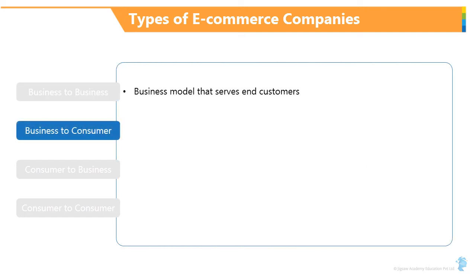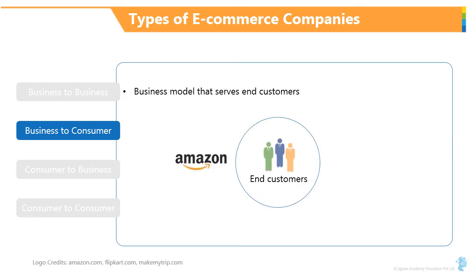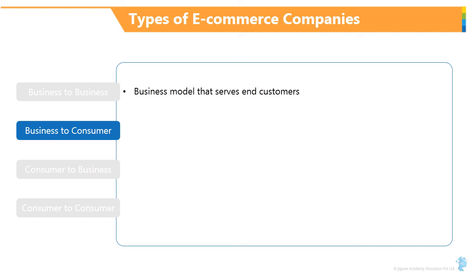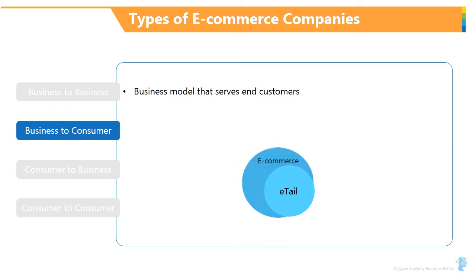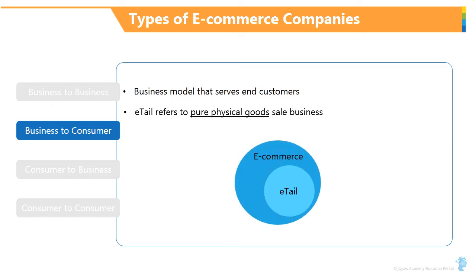The second one, B2C, business to consumer — the most popular one, which I'm sure you all would be aware of: Amazon, Flipkart, MakeMyTrip. Please note that sometimes e-tail is also referred to when you talk about e-commerce. It is largely a subset of e-commerce and refers to the pure physical goods sale business, such as what Amazon does or Flipkart does.